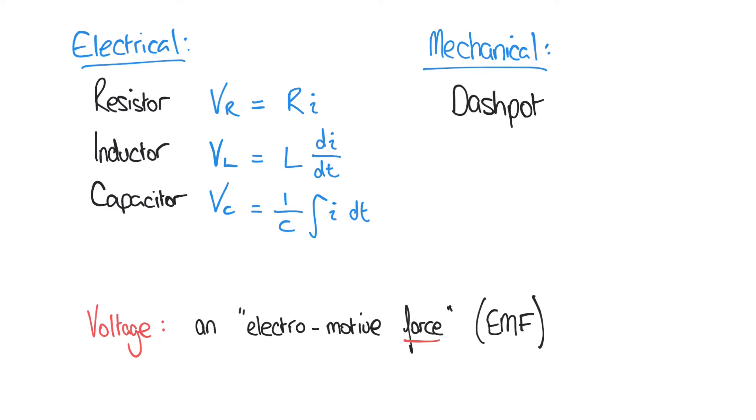Here's the describing formula for the dashpot. F equals mu V. And F is the force that's applied. Mu is the impedance of the dashpot, how much that dashpot is resisting movement. And V is the resulting velocity.